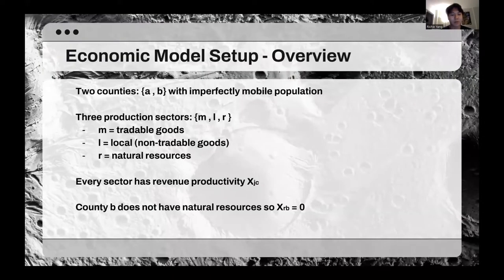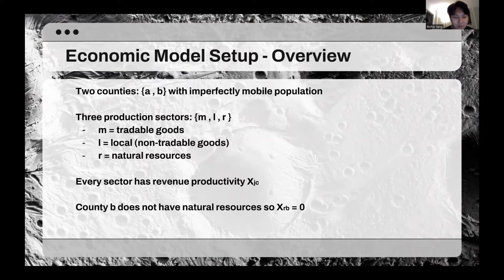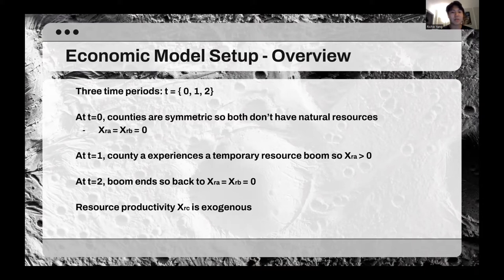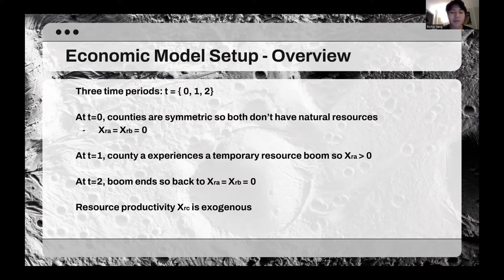The model was set up with two counties, A and B, with imperfectly mobile population. It assumes three production sectors: M (tradable goods), L (local non-tradable goods), and R (natural resources). Every sector has revenue productivity, and it assumes county B does not have natural resources. There are three time periods: at T=0 both counties are symmetric with no natural resources; at T=1 county A experiences a temporary resource boom; and at T=2 the boom ends, so both counties go back to zero resources. Resource productivity B is exogenous.